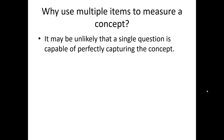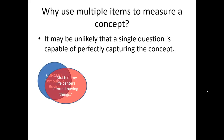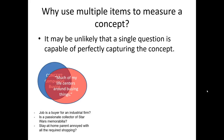A fair question to ask is why we use multiple items to measure a subjective property. The answer is that it's often unlikely that a single question is capable of perfectly capturing the concept we're interested in measuring. For example, consider the concept of compulsive buying and one of those measurement items: Much of my life centers around buying things. This single item clearly has some overlap with the idea of compulsive buying, but it also misses the mark. Perhaps somebody who has a job as a buyer for an industrial firm says much of their life centers around buying things — it has nothing to do with them being a compulsive buyer.